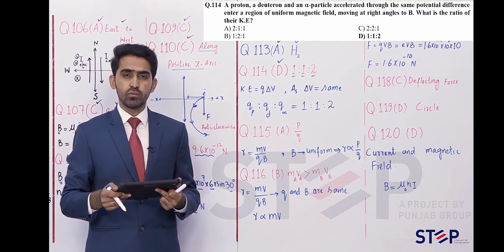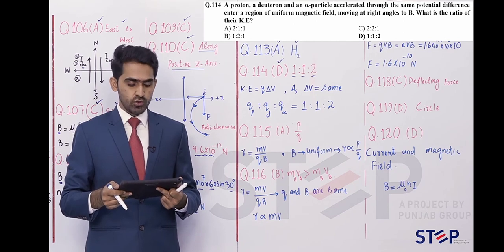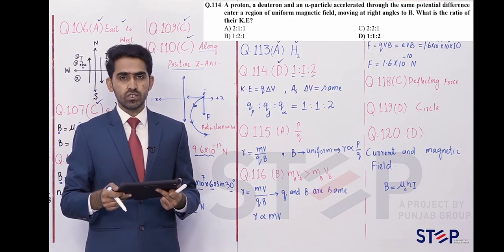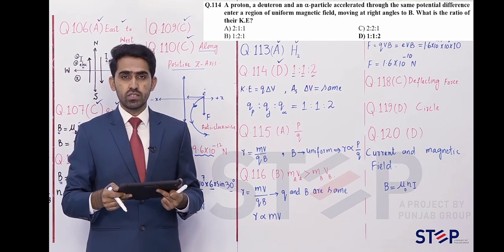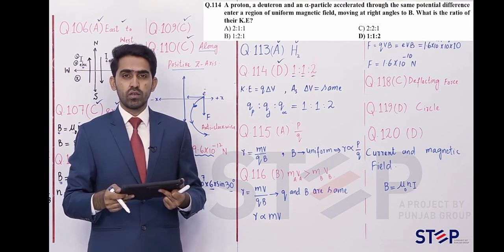The second isotope is called a deuteron, and its nucleus is also called a deuteron. Both hydrogen isotopes have the same charge of one proton. Alpha particle has two protons, so the charge is 2.